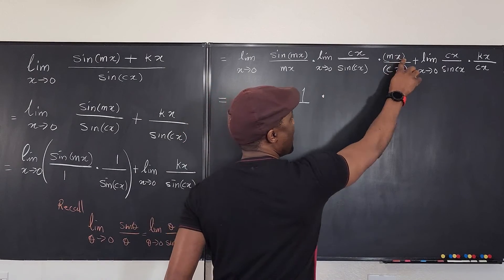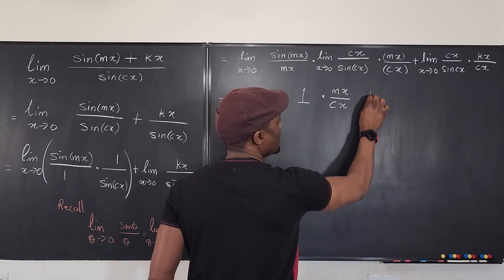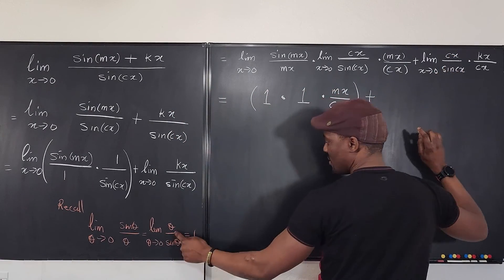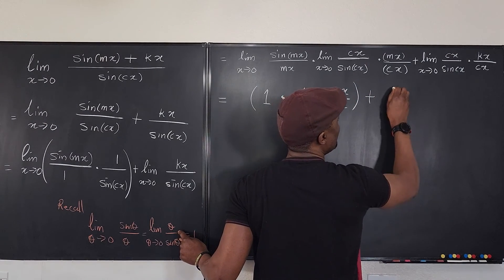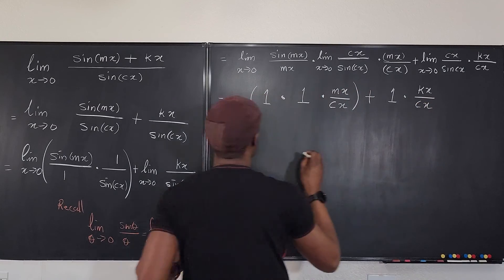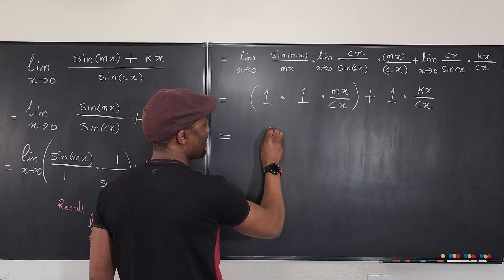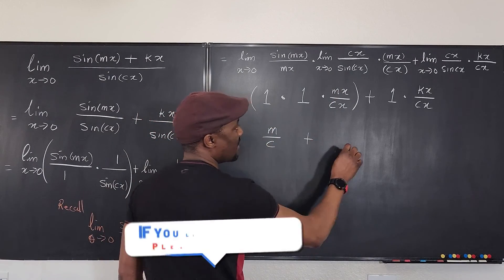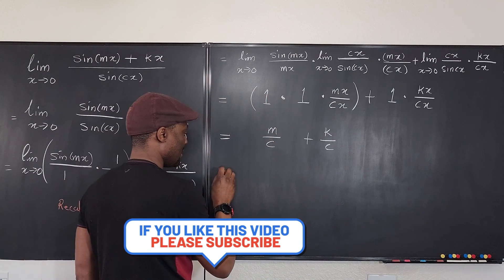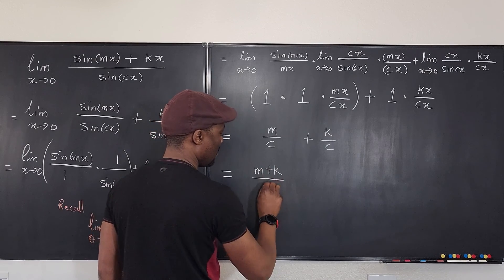And then what do we have? We have mx over cx. So mx over cx plus this goes to one because it matches this description. So we're going to have this to be one times kx over cx. So what do we have? So if we cancel these out, we're going to have m over c plus to cancel these two out. We're going to have k over c. And as you can see, the limit we have is equal to m plus k over c.